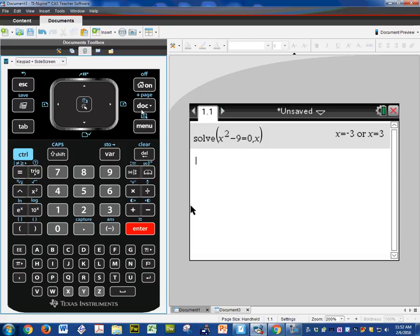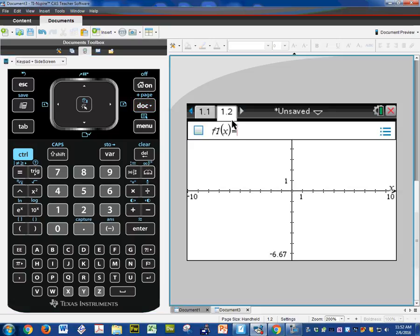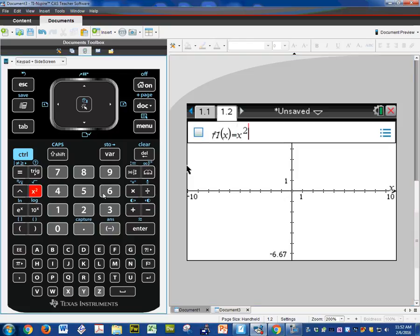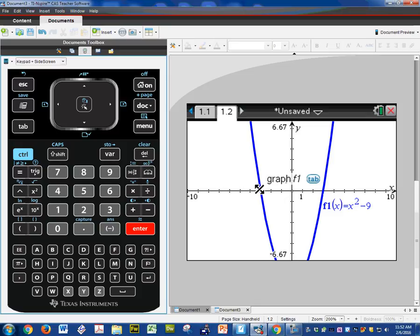Let's do the same feature under graphing. To add a graph, Control, Page, Graph. So if you remember, it was x squared minus 9. Enter. And now I want to solve it. I want to find the zeros.